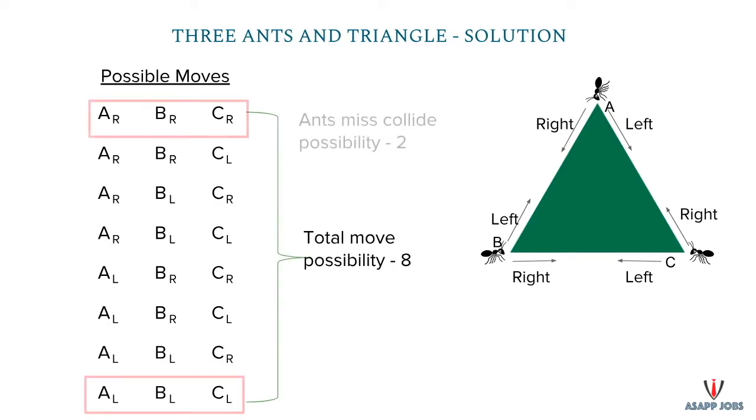There are eight total possible moves. Two moves are like this, which are moving in one direction, and the ants will not collide. In our table, in the first row, the ants are moving clockwise, and in the eighth row, the ants are moving in the anti-clockwise direction.